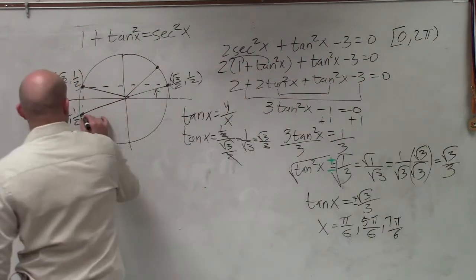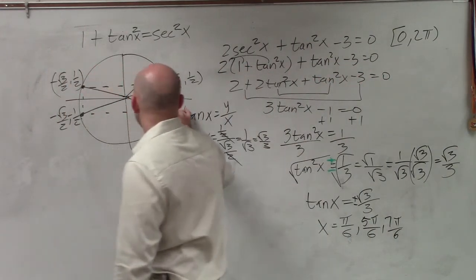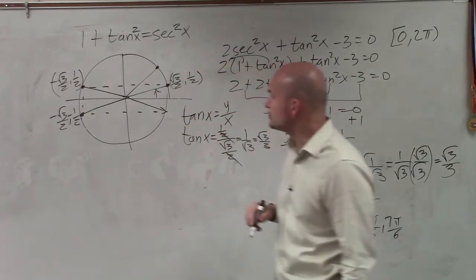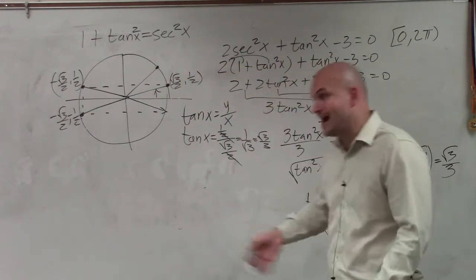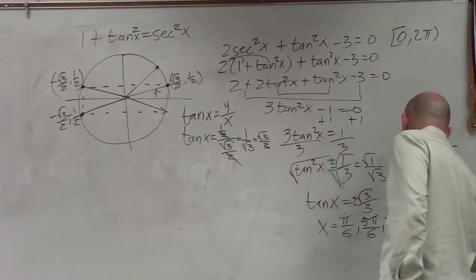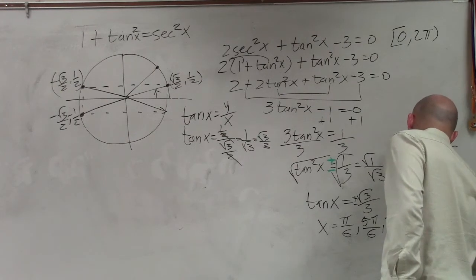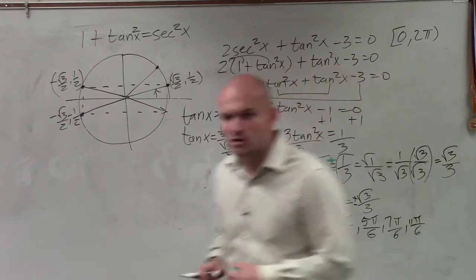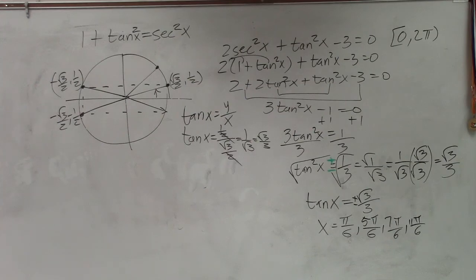Then I skip back across. And I look at that angle, which is √3/2, -1/2, which again, using the ratio works, which is 11π/6. So there are four solutions to that equation.